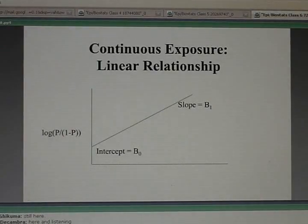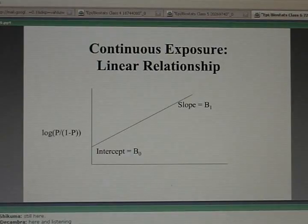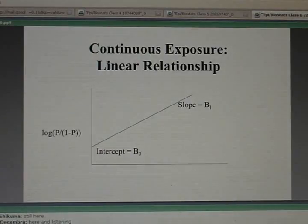That there's a straight line linear relationship between your value for your predictor, say smoking or age or blood pressure, and your log odds of getting disease. As you increase X, your log odds of getting disease increases under the straight line.